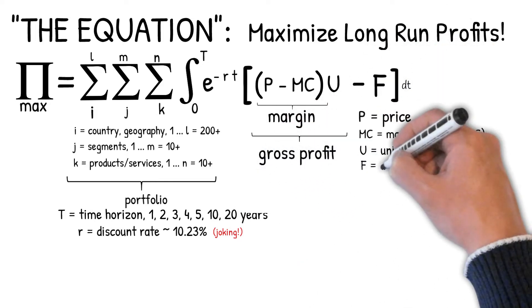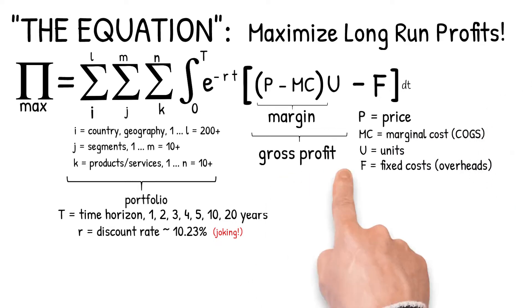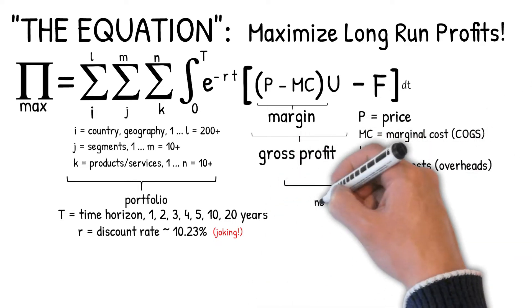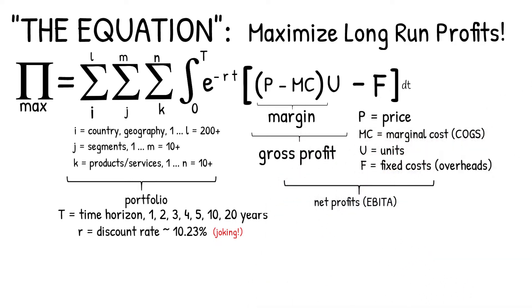What's missing, of course, is the overheads that we're going to call fixed costs. When you subtract your fixed costs from your gross profits, you end up getting your net profits.